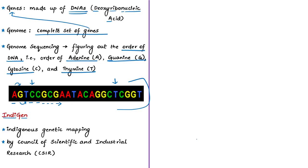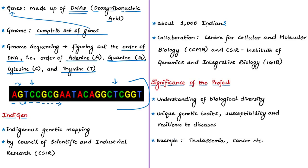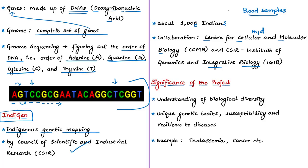A translated DNA sequence is shown in the form of alphabets: adenine followed by guanine, followed by thymine, followed by cytosine, and so on. The Council of Scientific and Industrial Research recently announced completing a six-month exercise of whole genome sequencing of around 1,008 Indians, started from April 2019. This project is part of the IndiGen program — aimed at indigenous genetic mapping of India's population — and involved collaboration of the Centre for Cellular and Molecular Biology from Hyderabad and the CSIR-Institute of Genomics and Integrative Biology.